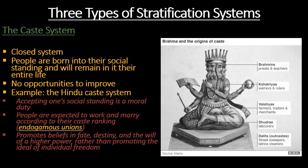We'll look at three different types of stratification systems. First, the caste system is a closed system — people born into their social rank will remain there their entire life with no opportunity to improve their standing. This is based particularly on the Hindu caste system, which you can see in the graphic on this slide, laying out the hierarchical tiers of Hindu stratification.